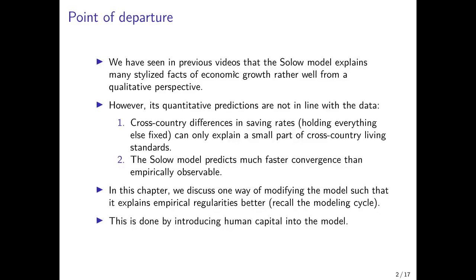From the previous videos, we know that the Solow model explains many stylized facts of economic growth rather well from a qualitative perspective. For example, there is rather constant long-run economic growth in richer countries driven by technological progress, there are convergence phases after wars or catastrophes, and persistent differences in income levels can also be explained by differences in parameter values such as investment or saving rates. However, the problem is that the quantitative predictions of the Solow model are not in line with the data. Cross-country differences in saving rates, if we hold everything else fixed, can only explain a small portion of the cross-country differences in living standards that we observe in reality. And the Solow model predicts a convergence rate that is much faster than the convergence rates that can be found empirically.